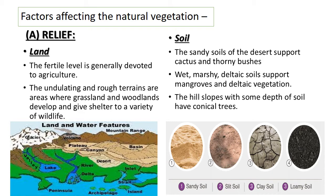We have different types of soil found in India, like alluvial soil, black soil, red soil, laterite soil, mountain soil, and desert soil. Different types of soil produce different types of plants. For example, the sandy soil of the desert supports cactus and thorny bushes; wet marshy deltaic soils support mangroves and deltaic vegetation; and hill slopes with some depth of soil have conical trees.